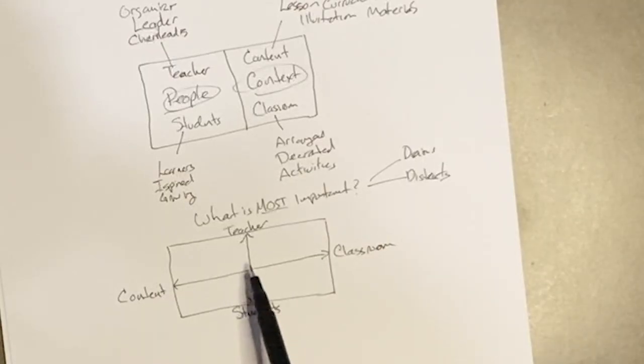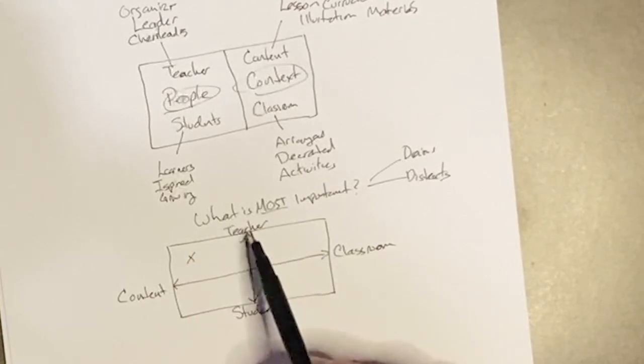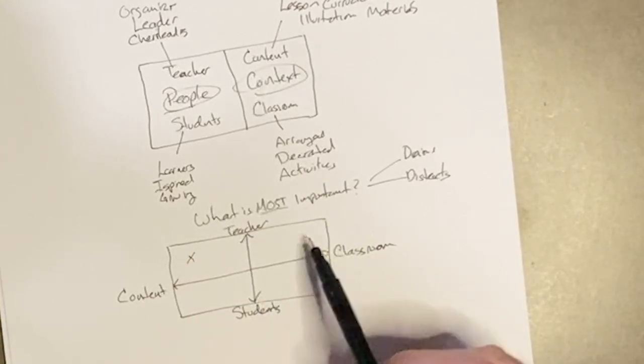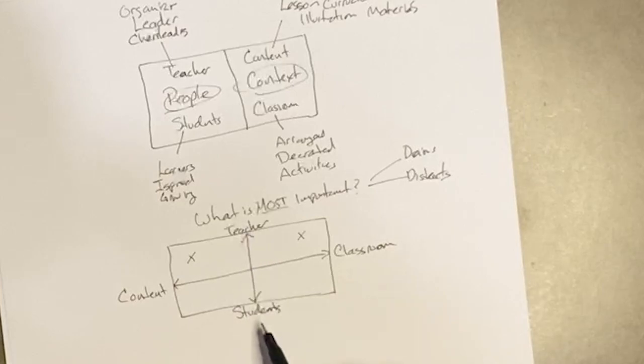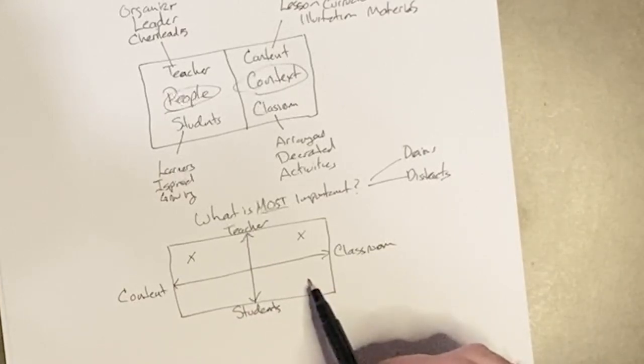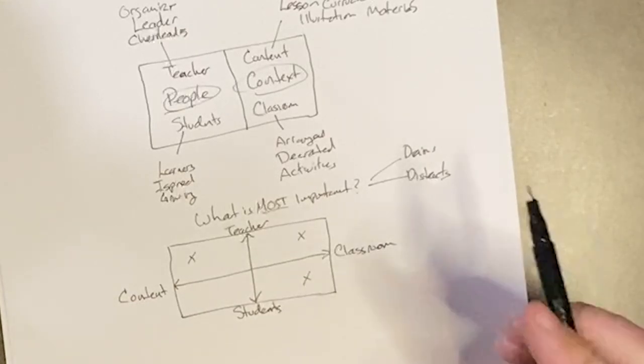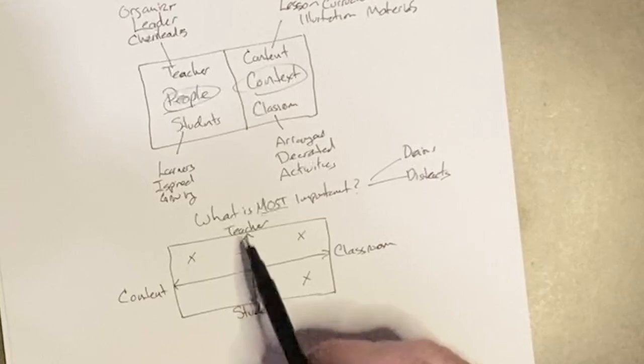Some of us are teacher-content heavy — we'd be over here on the continuum. Some of us are teacher-classroom heavy, meaning we have all our lessons and the room decorated and arranged just the way we want it, but we're missing a lot of other parts — missing the connection with the students. And then there's the classroom-student focus, where you want the fellowship and the things you do together to be most important. How about student-and-content focused? That's where you find a lot of group dynamics and group projects coming together — the content and students working with it, not really teacher-focused but more student-focused.